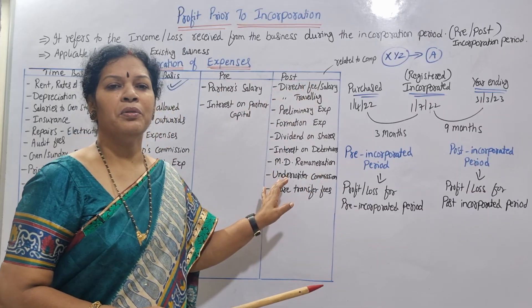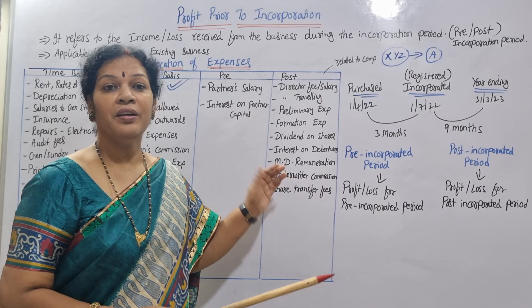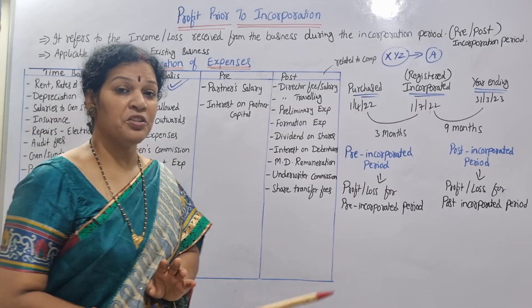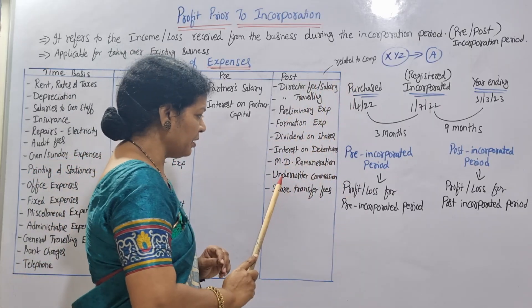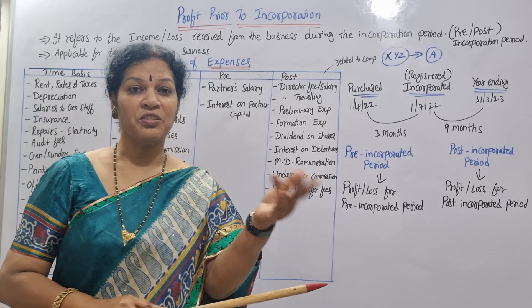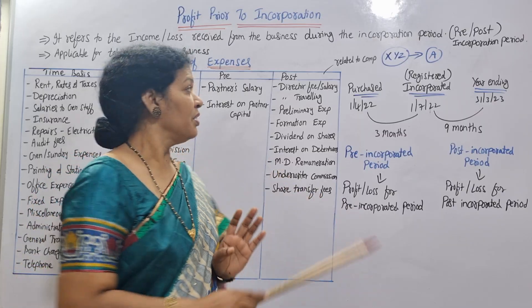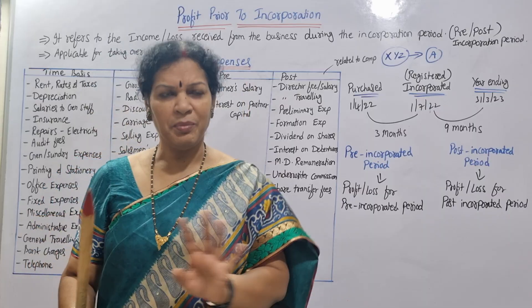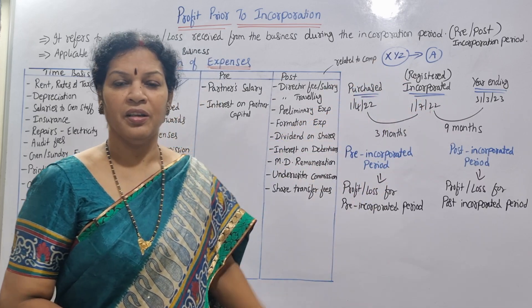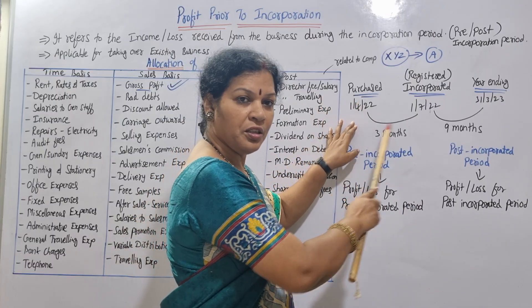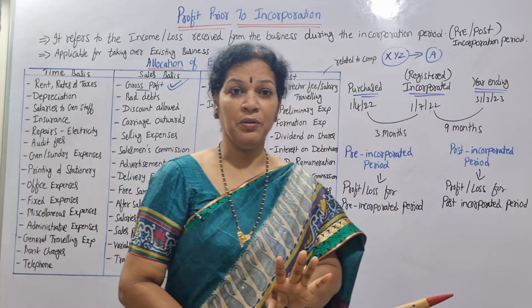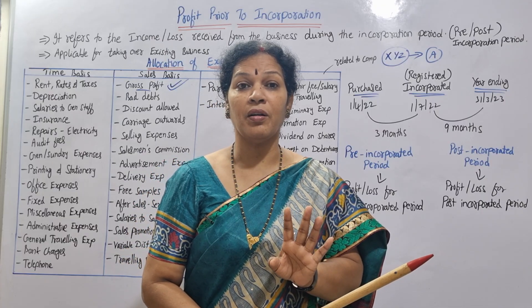Underwriter commission also goes to the post column. Underwriters guarantee the purchase of shares; the commission paid to them is related to the company. Share transfer fees — charged when shares are transferred — are also posted to the post period. All these items are company-specific and are not split between pre and post.